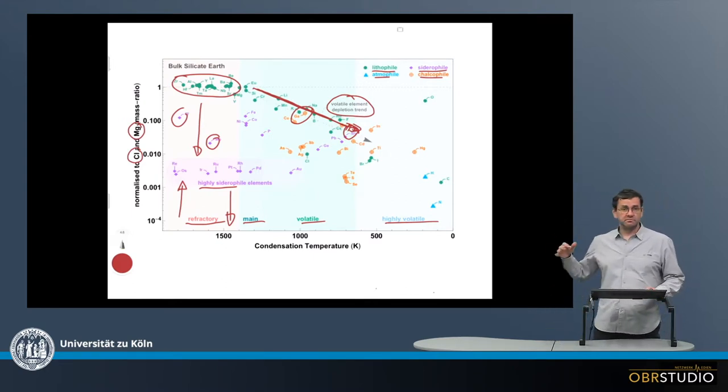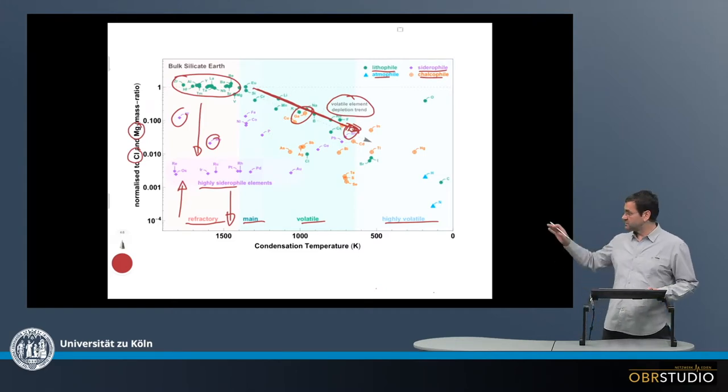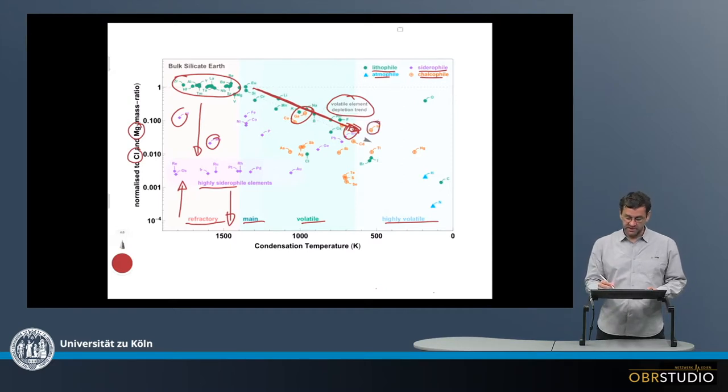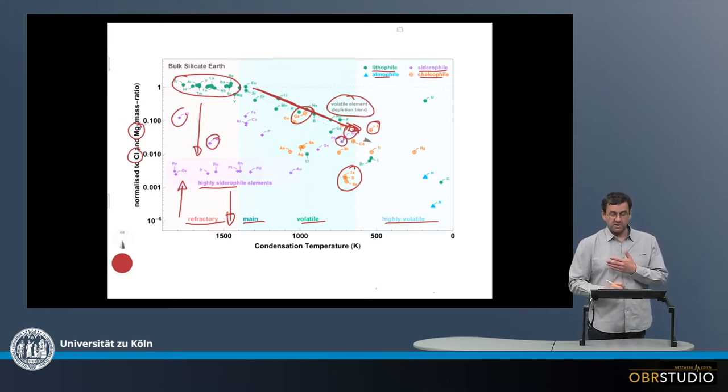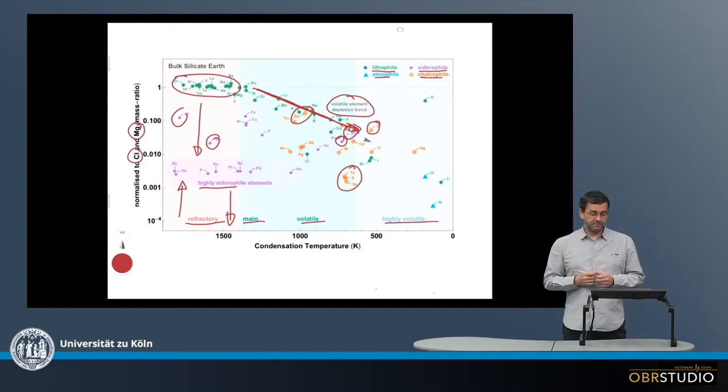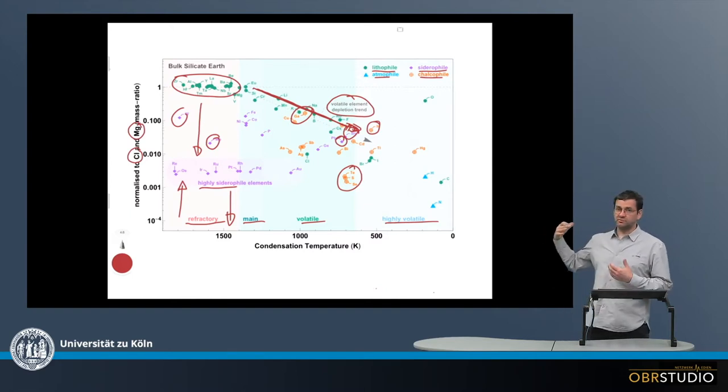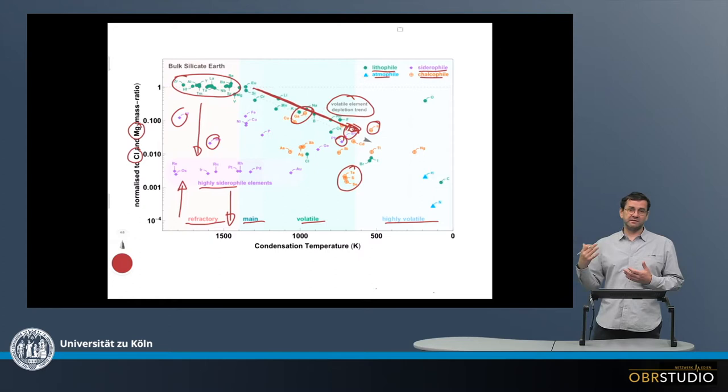Now there are quite a number of either individual elements or groups of elements that deviate from this monotonic depletion trend. For example, indium is a little bit high. Sulfur, selenium, and tellurium are quite low. Lead is a little bit low, which is an important element for dating. These individual elements and groups of elements need some specific explanations.